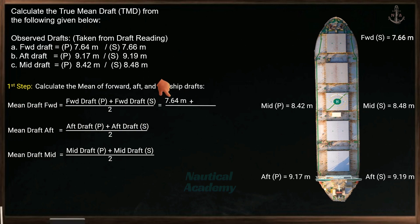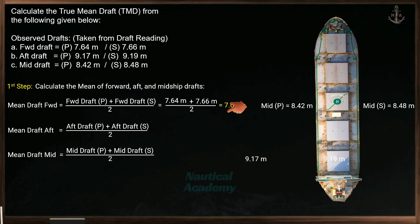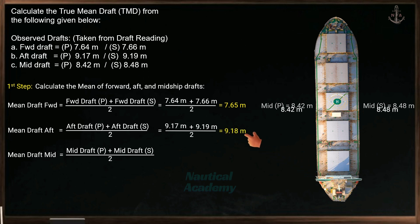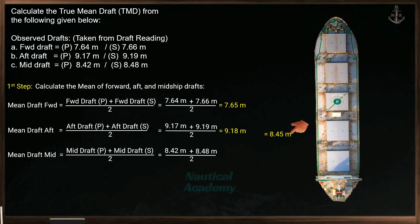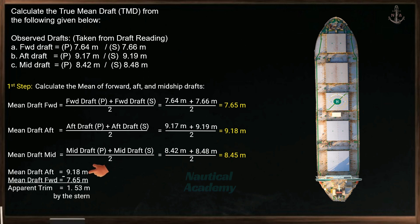Port forward draft plus starboard forward draft, divided by 2 — the mean draft forward is 7.65 meters. Next, do the same for the aft draft: the mean draft aft is 9.18 meters. And also do the same for the midship draft: the mean draft midship is 8.45 meters. The difference between the mean of aft and forward drafts is called apparent trim, or the observed trim, which is 1.53 meters by the stern.